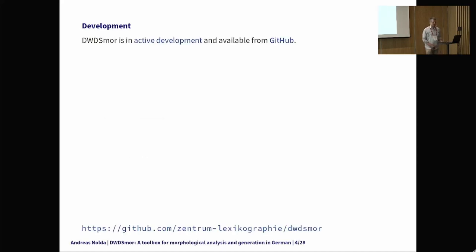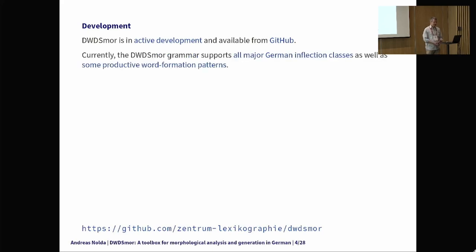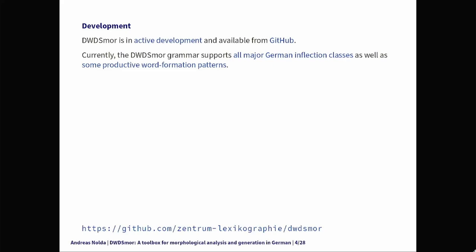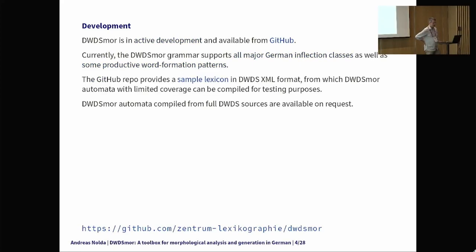DWDSmore is not yet finished — it is in active development — but is already available from GitHub. It currently supports all major German inflection classes and some productive word formation patterns such as compounding. On the GitHub repository there is a small sample lexicon in DWDS XML format which you can use for testing the system.